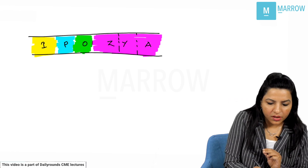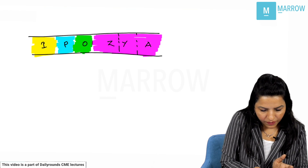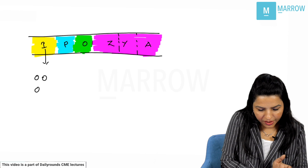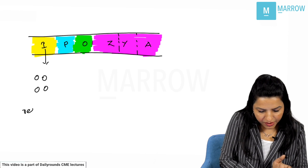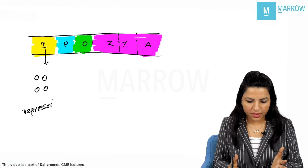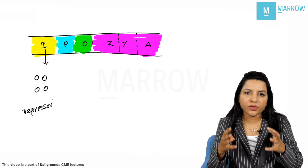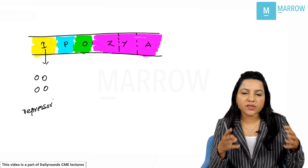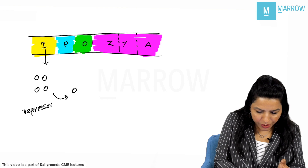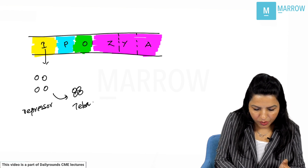First I'll explain the concept of repressor protein. The lac I gene produces a repressor protein and this is always present. Normally in E. coli bacteria the repressor is always produced, and this repressor will form into a tetramer state — four subunits joined together to form a tetramer.